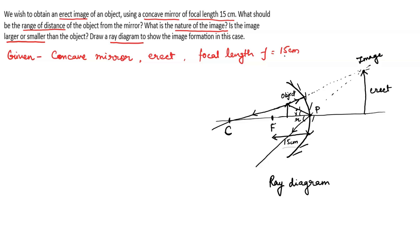This image is erect. Erect means the image is formed straight. Now look at the question. The question is, what should be the range of distance? So range of distance will be from pole to focus, from pole to principal focus, or we can say that range is from zero centimeters to 15 centimeters, because the focal length is given as 15 centimeters.